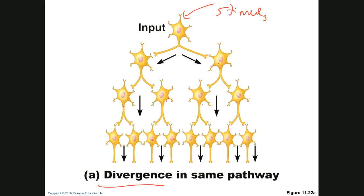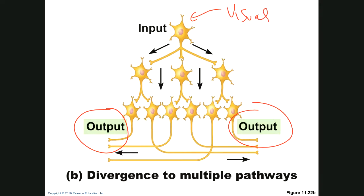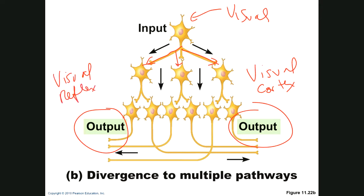Another type of divergent circuit sends information to different places in the nervous system rather than amplifying it. For example, visual information from the retina travels via the optic nerve to the brain, where it diverges — going to the visual cortex to create an image and also to the part of the brain handling visual reflexes. So one source spreads information to two different areas via a divergent pathway.